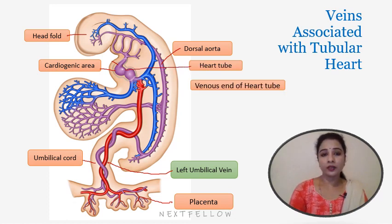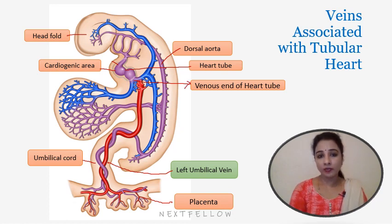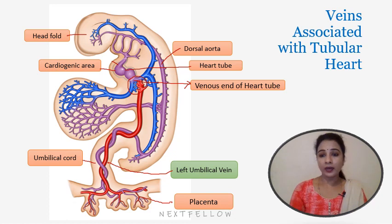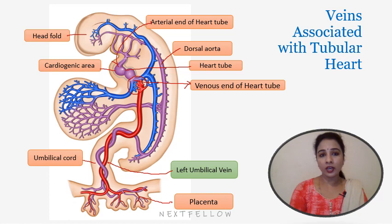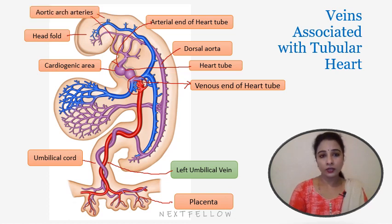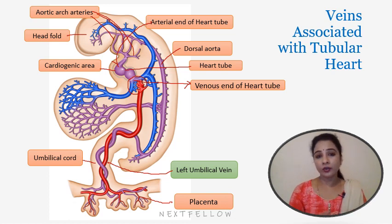This is the heart tube with its dilatations, and at the venous end we can see several veins draining into the heart tube, including the umbilical vein. Before draining into the heart tube, they form plexuses of veins within the septum transversum — those are the hepatic plexuses. Here is the arterial end of the heart tube, connected to the dorsal aorta by various aortic arch arteries — one, two, three, and four — connecting the ventral aorta to the dorsal aorta.